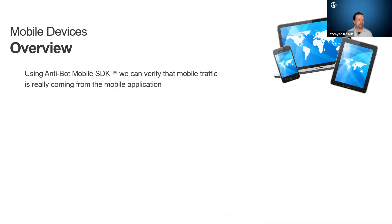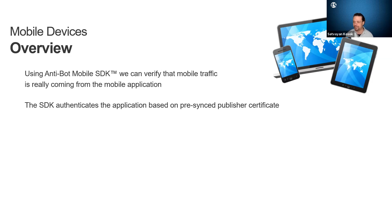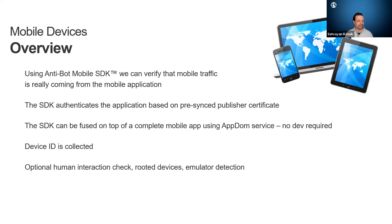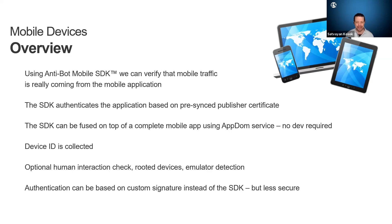Regarding mobile devices: mobile native applications do not respond to JavaScript. So when we issue a JavaScript challenge, if that is a native mobile app, it won't respond. There are two workarounds for this. One is to use the anti-bot mobile SDK — that uses application authentication based on a publishing certificate. We also use AppDome, so there's no SDK integration requirement on your end. You simply use a wrapper. Device ID is collected and we can do additional human interaction checks. We can also look to see if a device is being rooted or if emulators are being detected. We can also use a custom signature instead of the SDK, but that's not as secure, though it bypasses having to wrap your application.